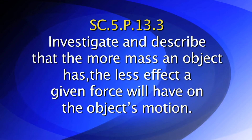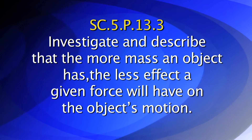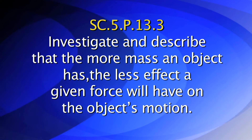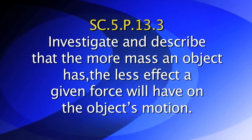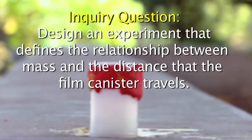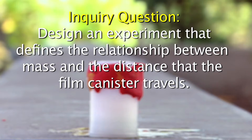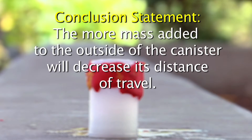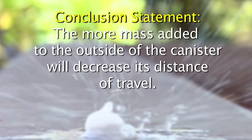The Sunshine State standards in this lab have students investigate and describe that the more mass an object has, the less effect a given force will have on the object's motion. The inquiry question for this lab is: using the materials provided, design an experiment to define the relationship between the amount of mass and the distance that a film canister travels. The conclusion statement for this lab is: having more mass around the canister will decrease its capability of traveling further.